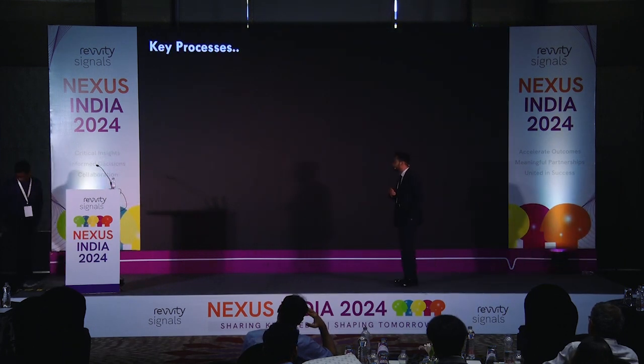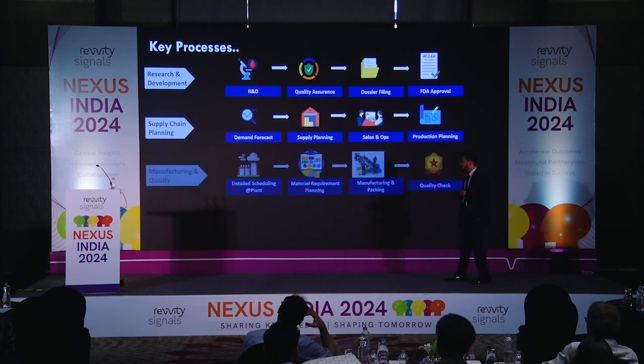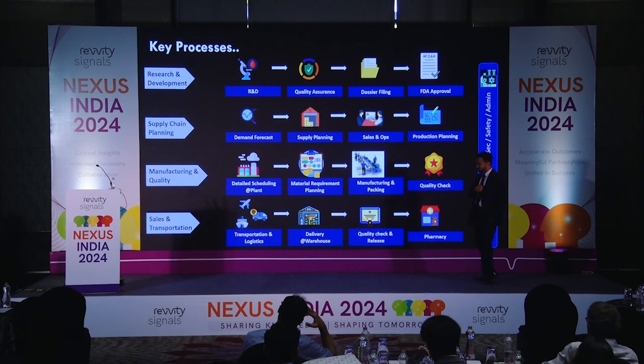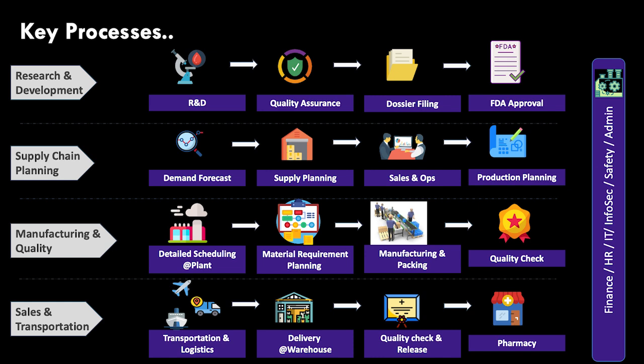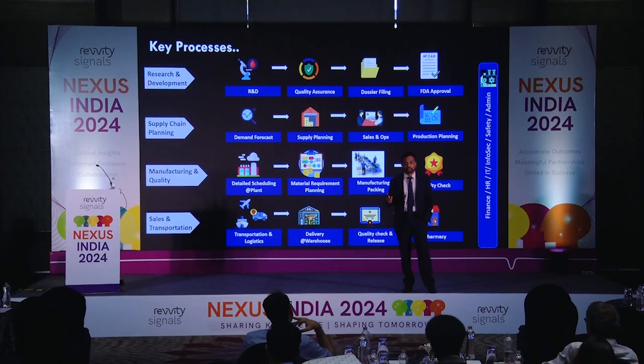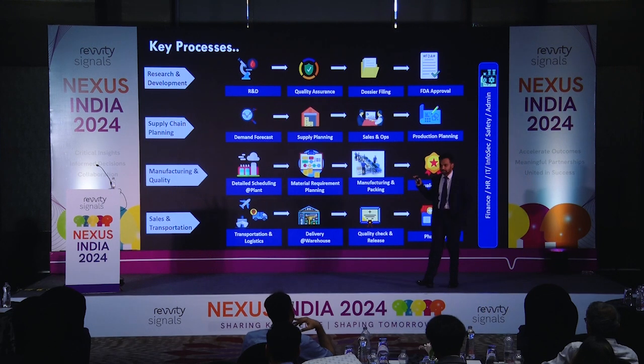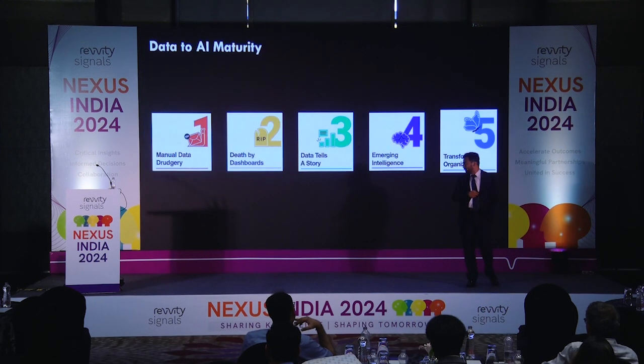There are certain key processes around all our organizations. The first row is around R&D; the second is supply chain; the third is manufacturing quality; the fourth is sales and transportation. You can pick up any area, look at digitalization first, and then ask how do I make sense of the data? We are generating data at every level — how do I convert that into actionables? This is applicable across all four rows.